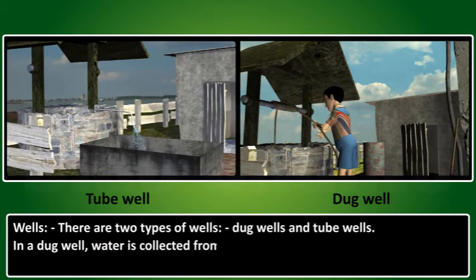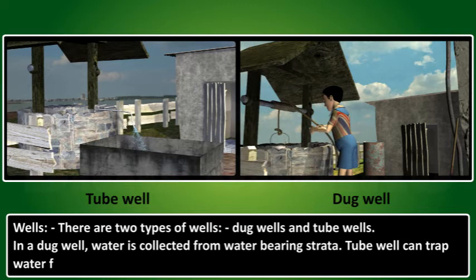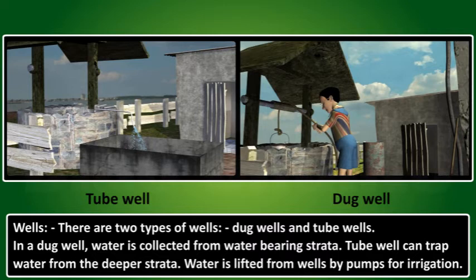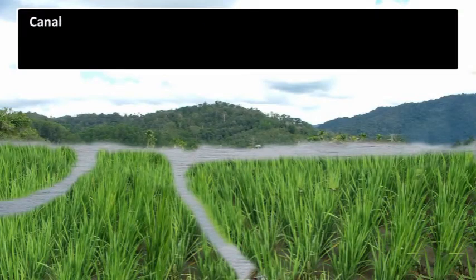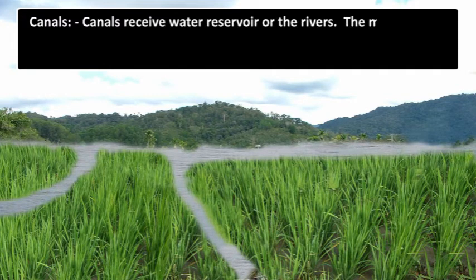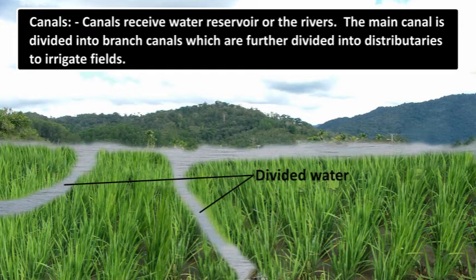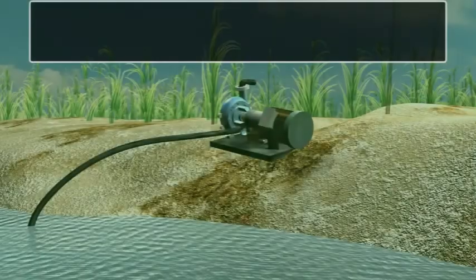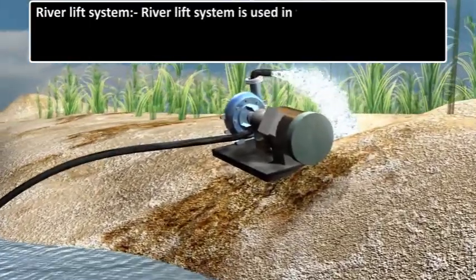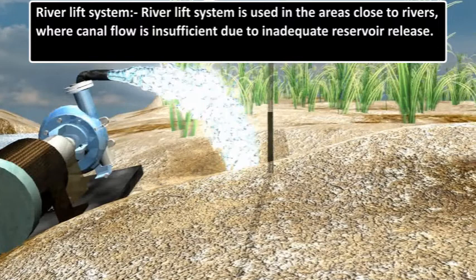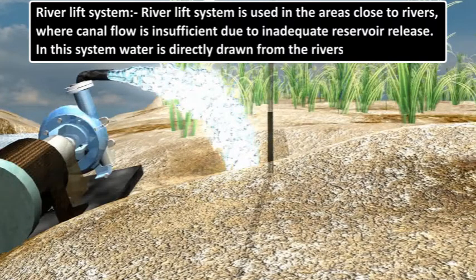In a dug well, water is collected from water-bearing strata. Tube wells can tap water from the deeper strata. Water is lifted from wells by pumps for irrigation. Canals receive water from reservoirs or rivers. The main canal is divided into branch canals, which are further divided into distributaries to irrigate fields. The river lift system is used in areas close to rivers where canal flow is insufficient due to inadequate reservoir release; in this system, water is directly drawn from the rivers for irrigation.